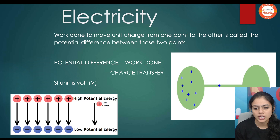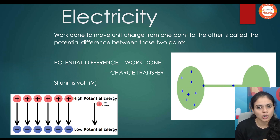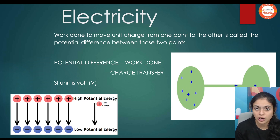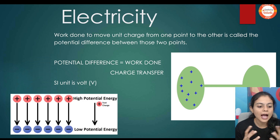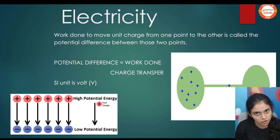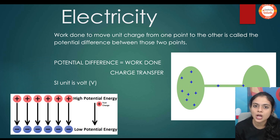Electricity. Work done to move a unit positive charge from one point to another is called electric potential difference. That is given by the formula V is equal to W by Q. The SI unit is volt. High potential is where a large number of positive charges are present. Where negative charges are present in more number, that is called a low potential region. More positive charge means high potential; more negative charge means low potential.